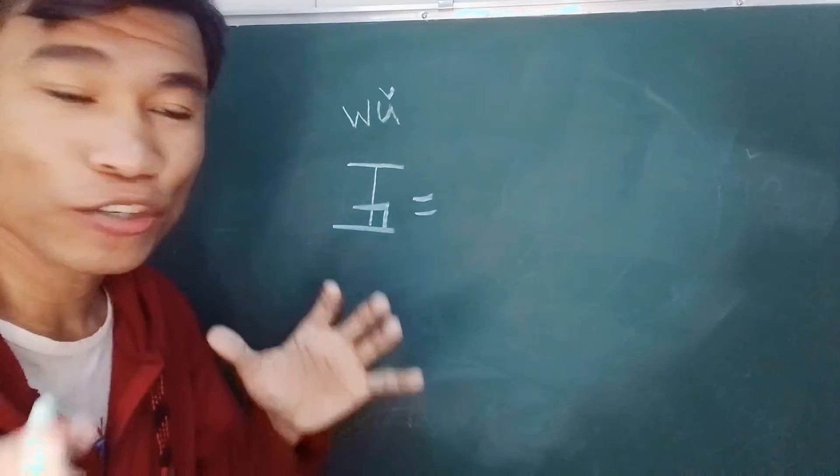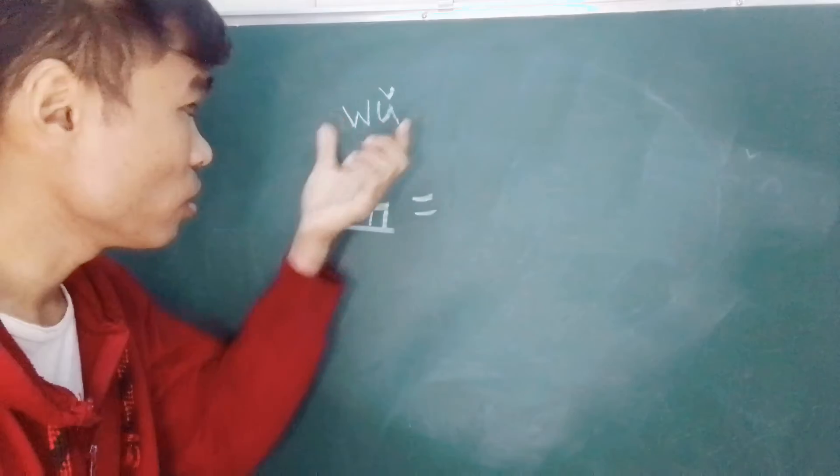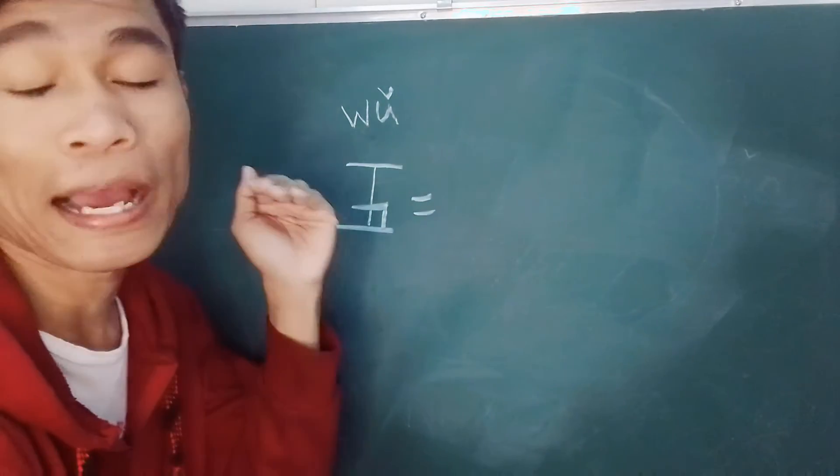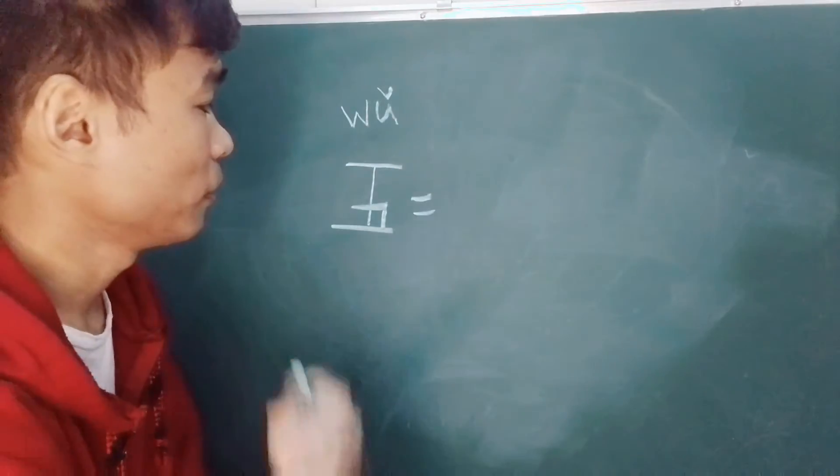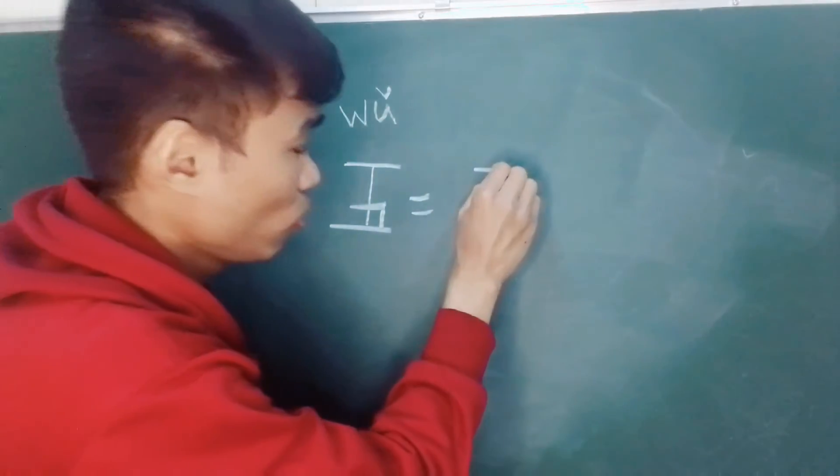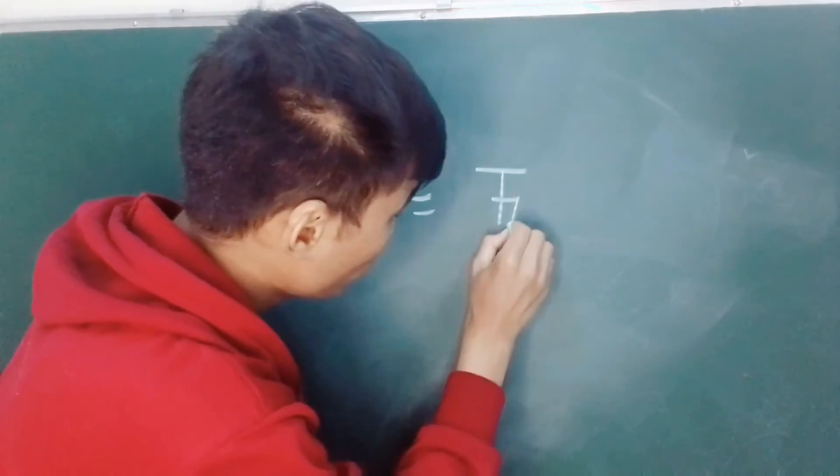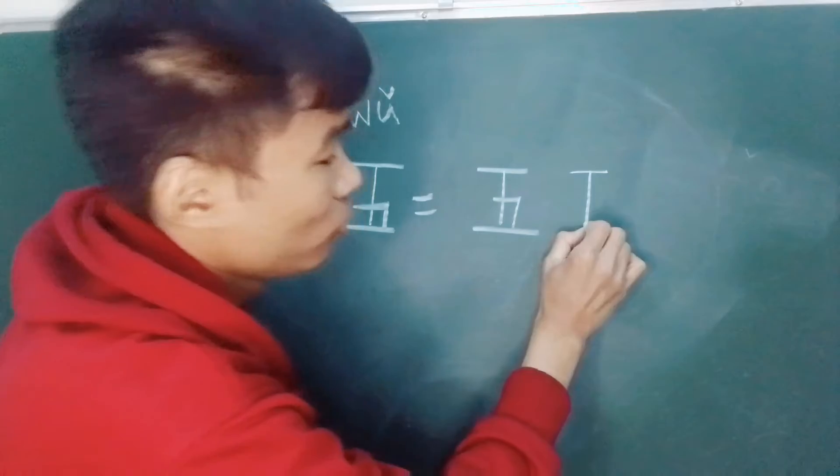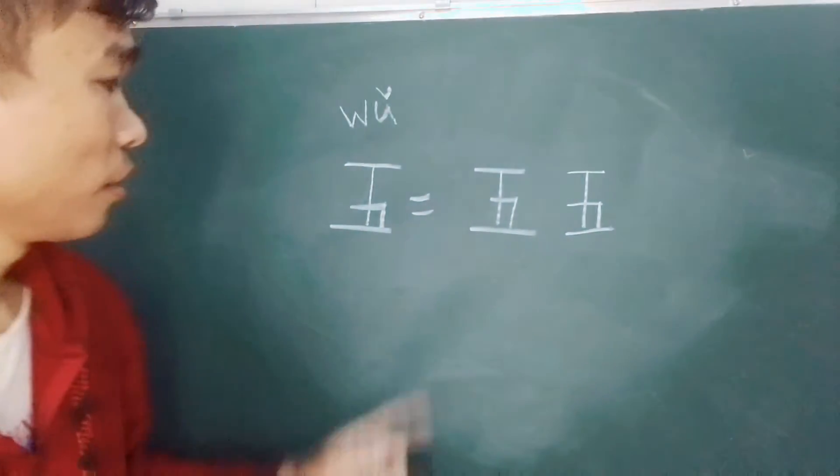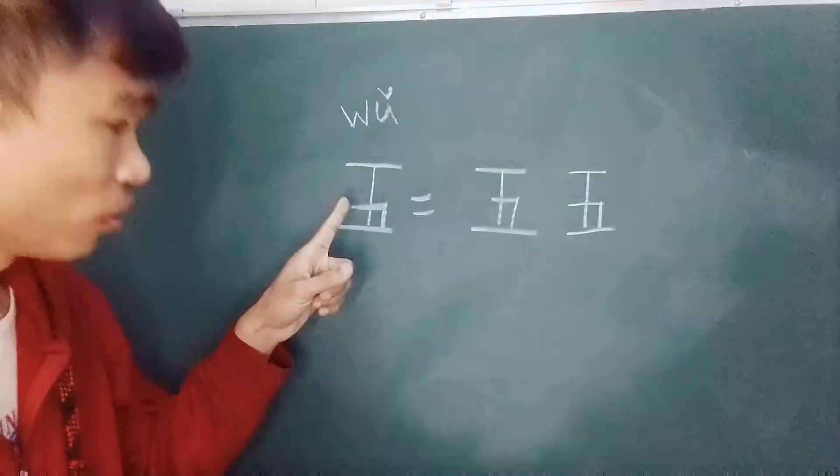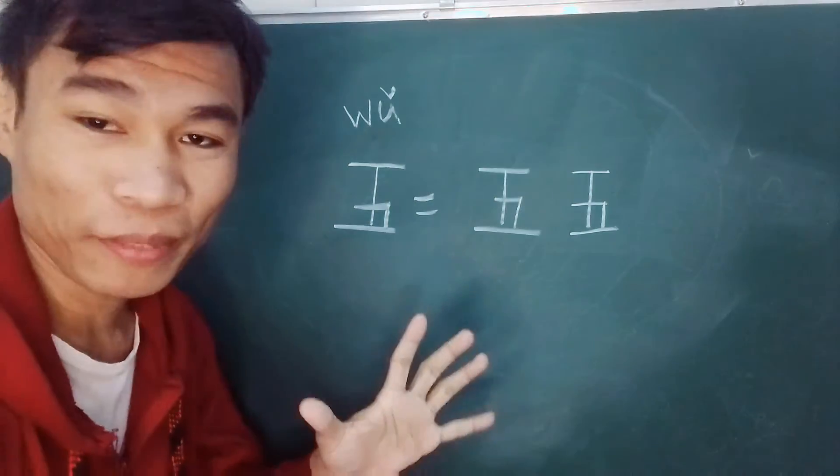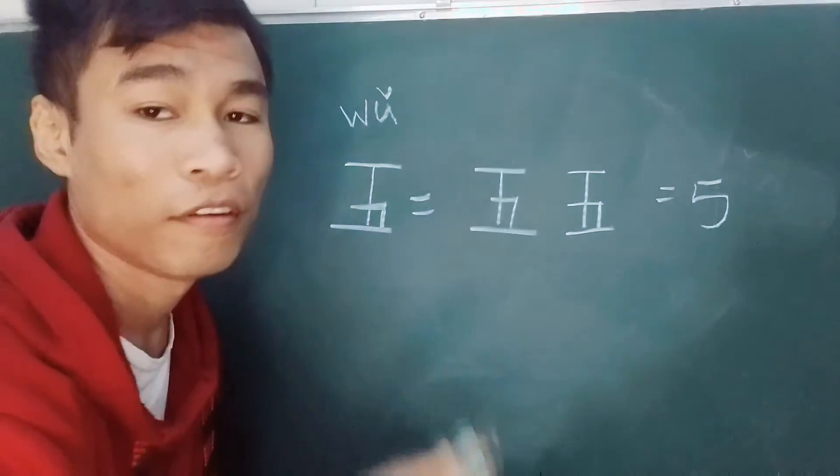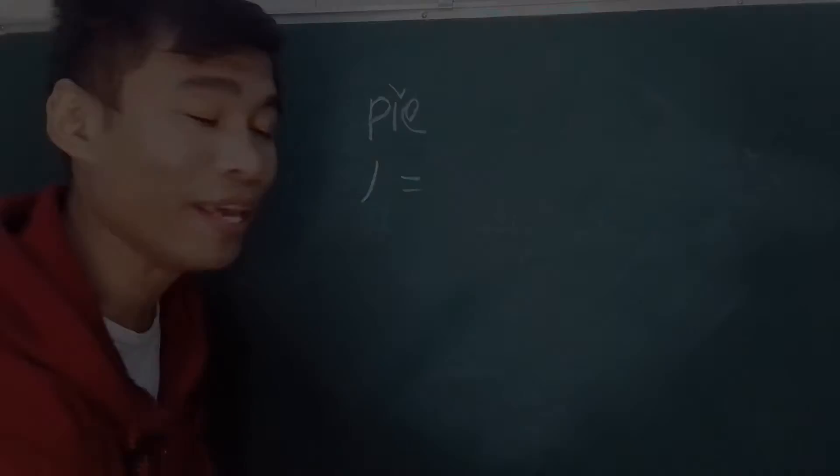I just wrote down on the board this word. This is called wu, it means five, number five. So how did I make this word? I will show you how to write it. Okay, I will write again.